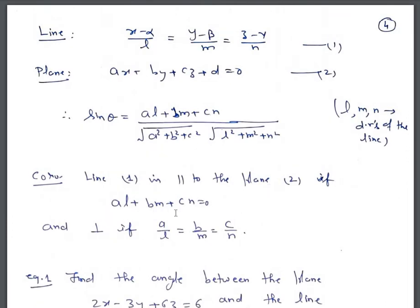A corollary: the line is parallel to the plane if AL plus BM plus CN equals 0, because then theta equals 0 and sine theta equals 0. The line is perpendicular to the plane when A upon L equals B upon M equals C upon N, because when the line is perpendicular to the plane, the normal of the plane is parallel to the line.